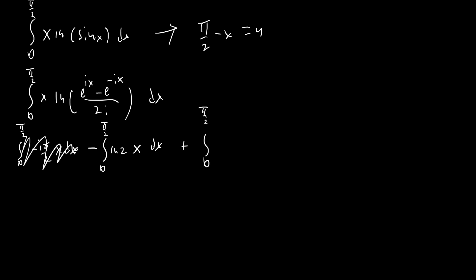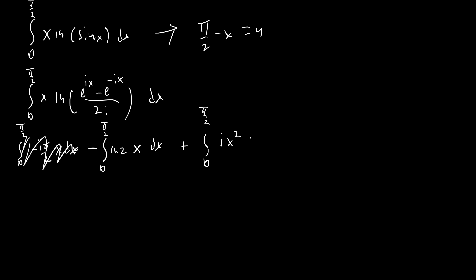We're also going to have plus the integral from 0 to π/2 of ln(e^(ix) − e^(−ix)). One thing that we can do here is go ahead and separate out this e^(ix), so we're going to get ix² + x · ln(1 − e^(−2ix)) dx.